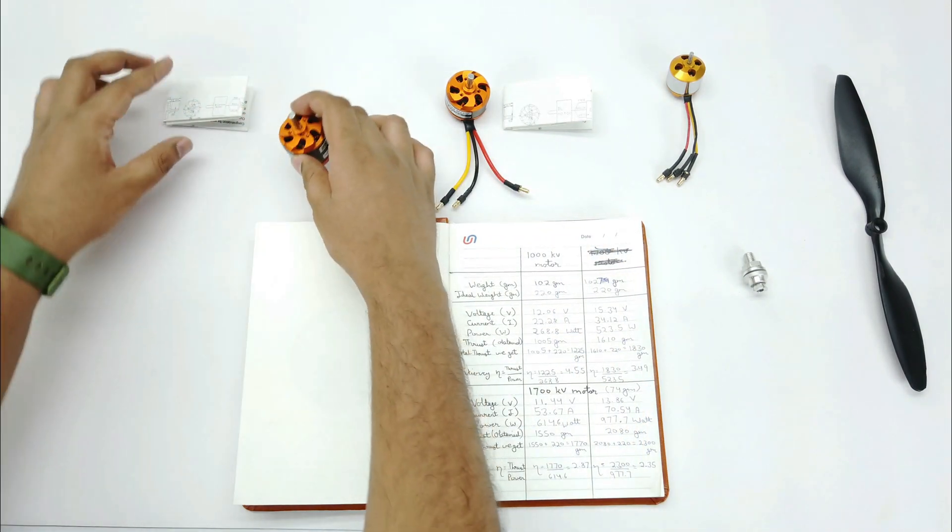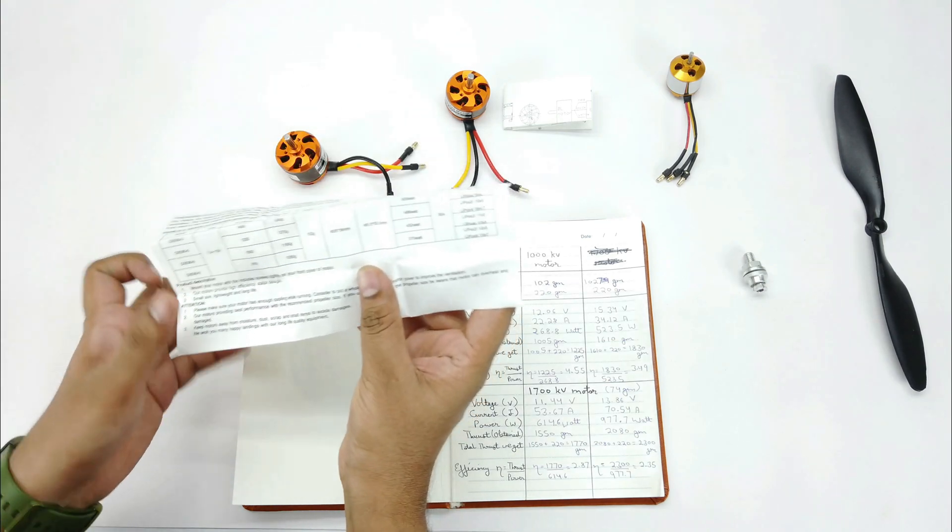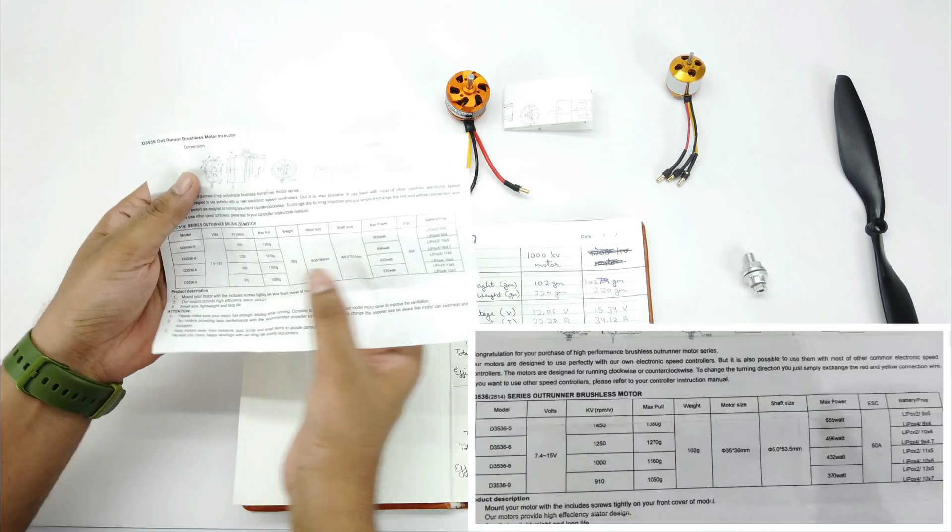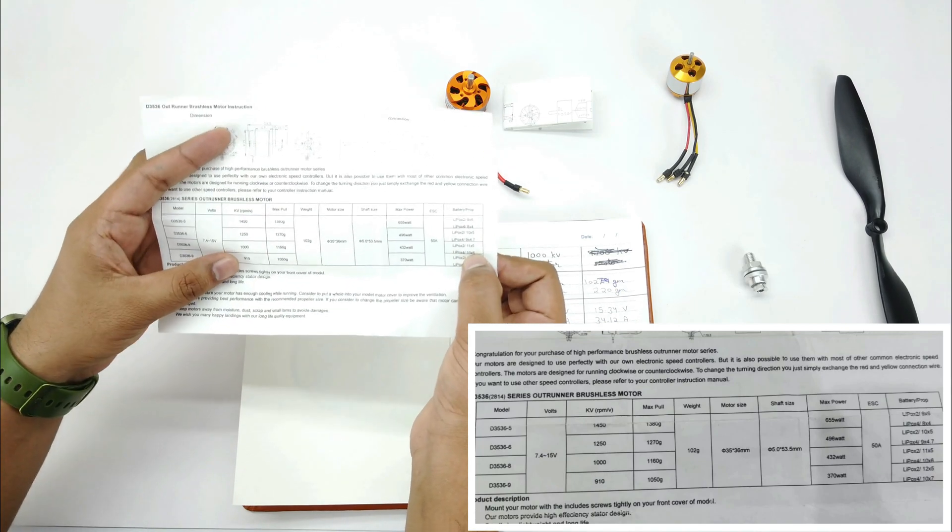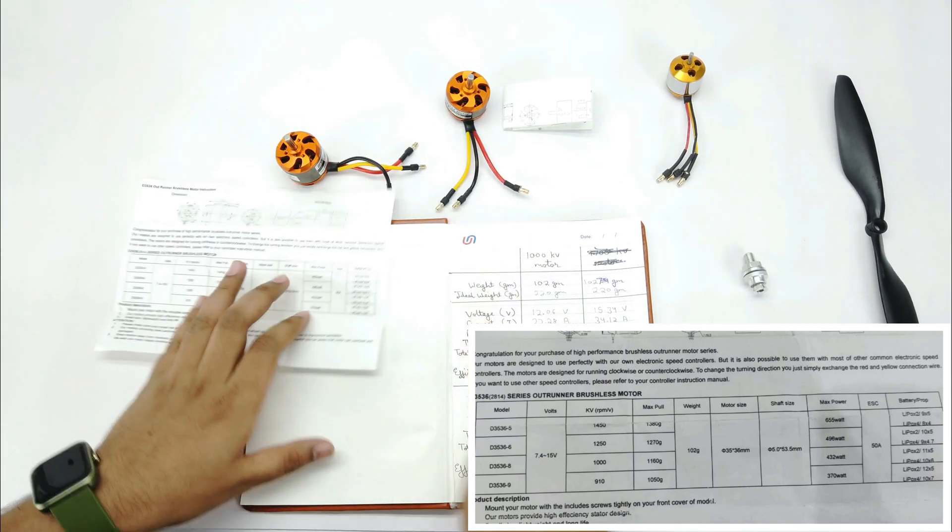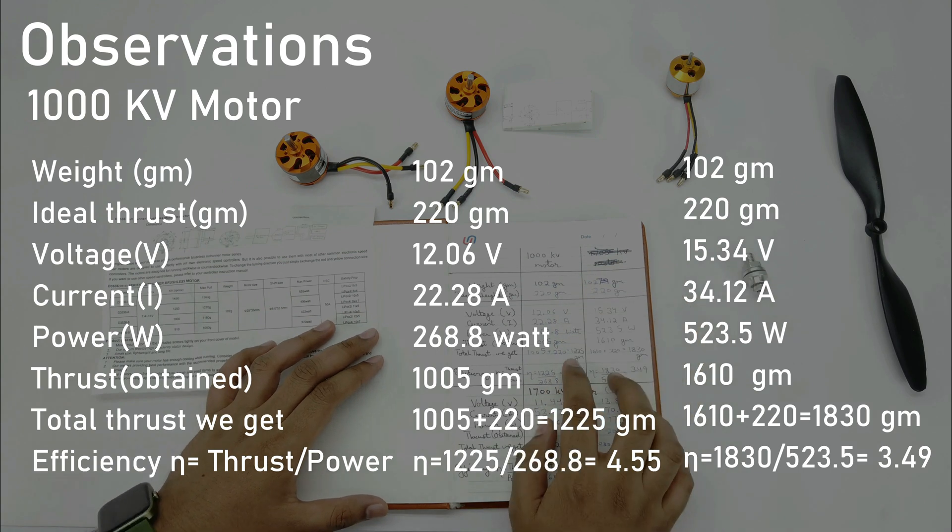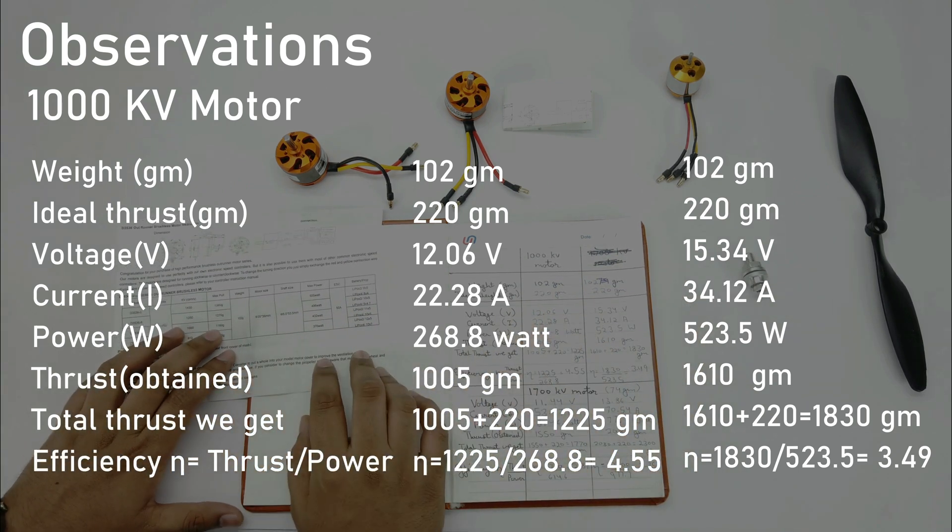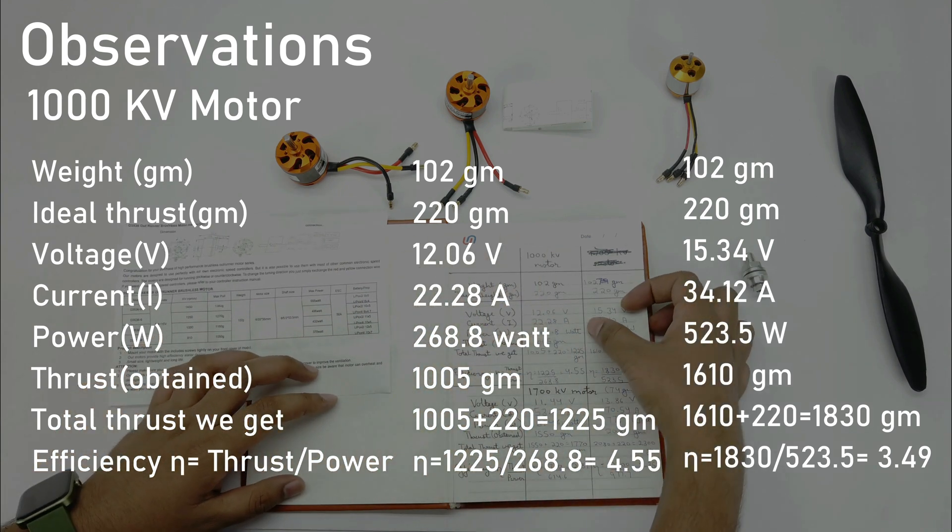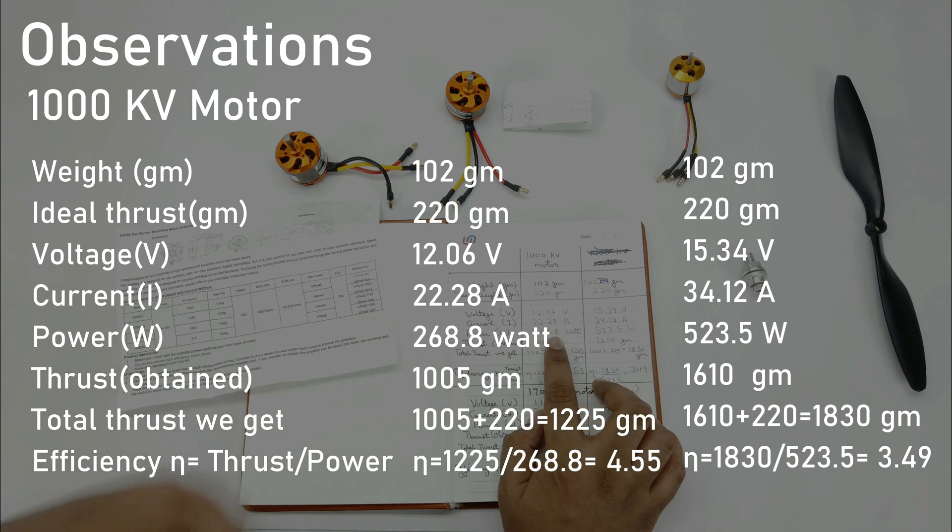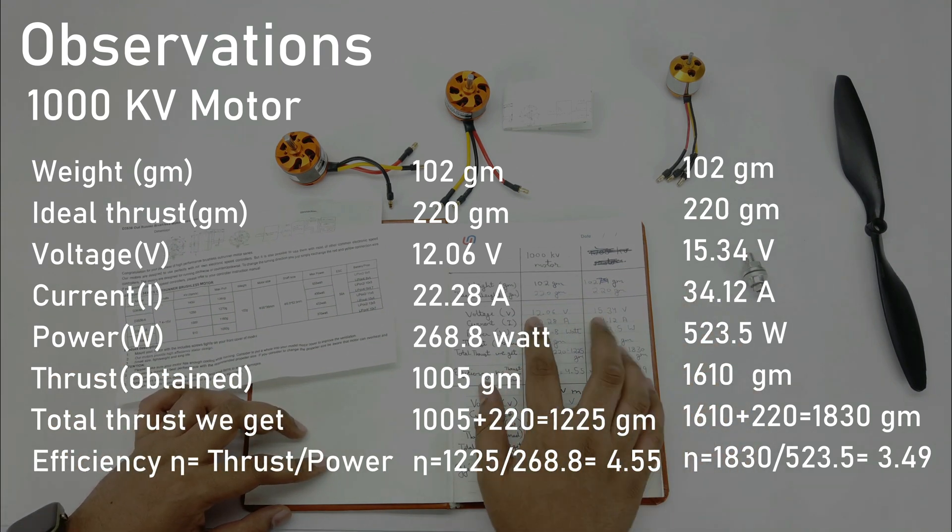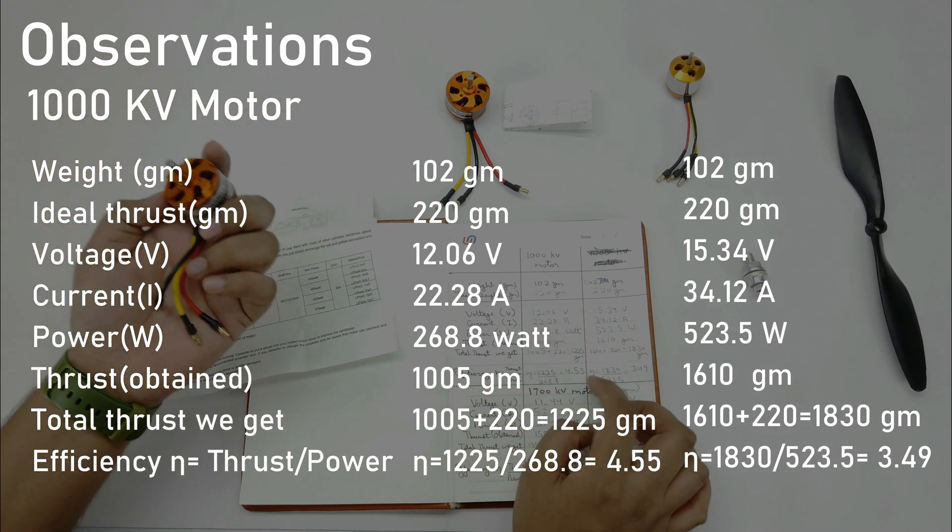Let's start with the 1000kV motor. In the specification chart it is mentioned that 1000kV motor gives the thrust of 1160 grams with a 10 inch propeller. But here we got a total thrust of 1225 grams, which is quite similar to 1160 grams, so it is more or less the same. The efficiency that we got is 4.55 and it consumed 260 watts. 4.55 is the best among all four configurations. So this is the most efficient one with a 3S battery.